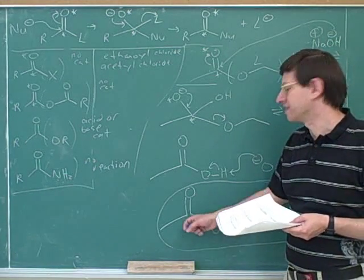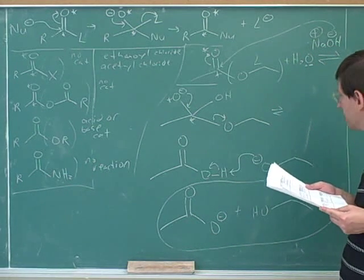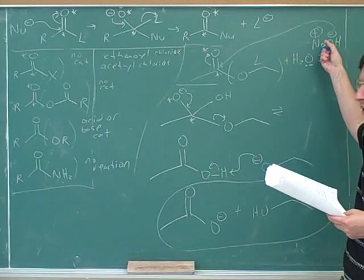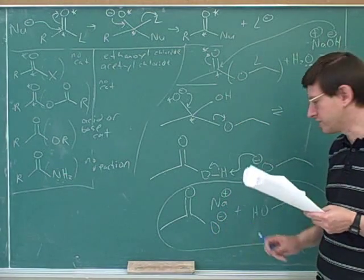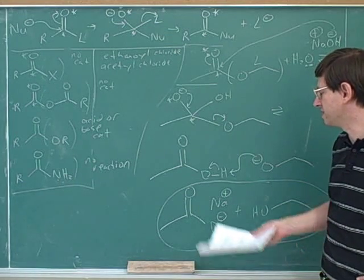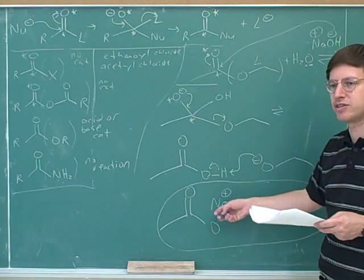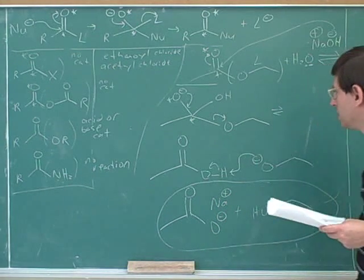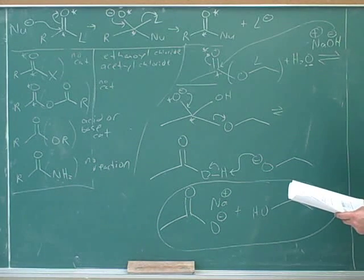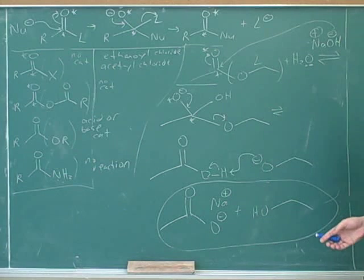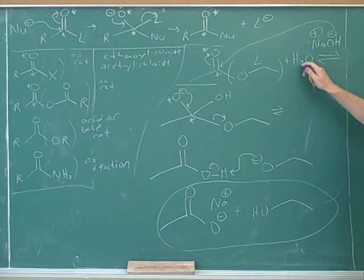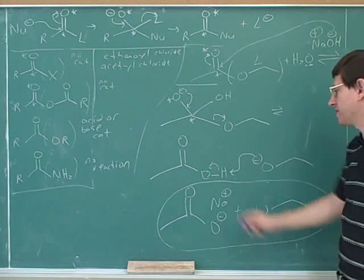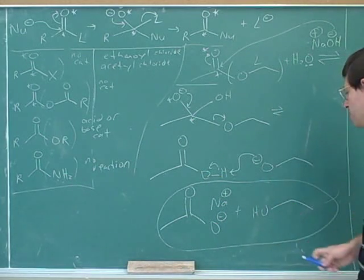We still have the counter ion, so we could call it sodium acetate. It's conventional to show the counter ion next to the charge, so we end up with sodium acetate. In some ways, the base-catalyzed version is simpler — we just use the base as the nucleophile. It makes sense to use a base very similar to water so we don't need to worry about them competing. Under basic conditions, carboxylic acids don't stay as acids — they turn into carboxylates, and this is the best way to show that.